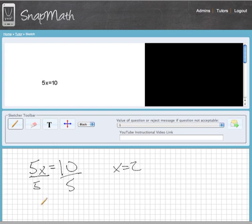And then it gets x equals 2 as these cancel out to 1, and then 10 divided by 5 is 2. So we get x equals 2.